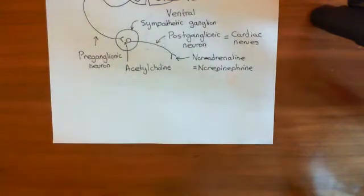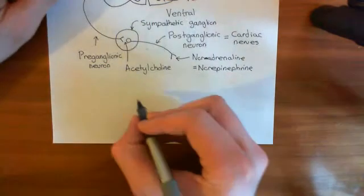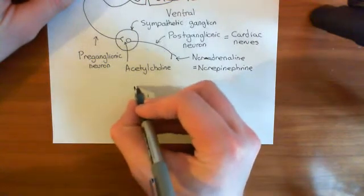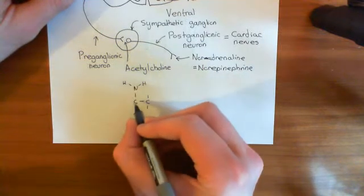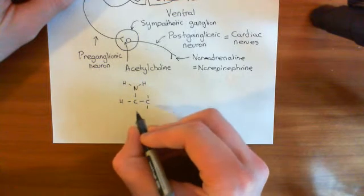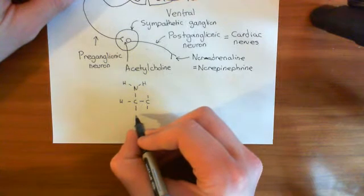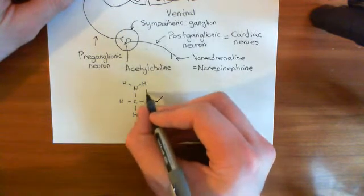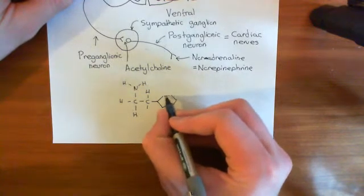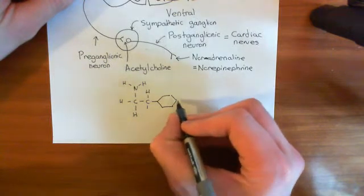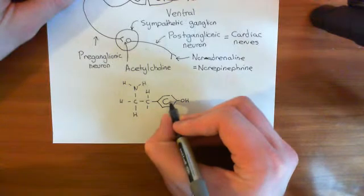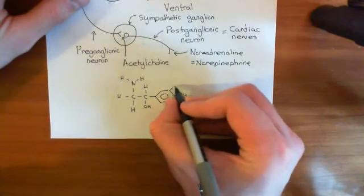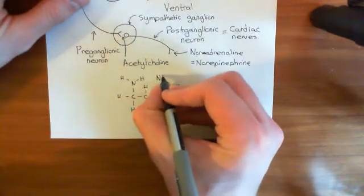The structure of norepinephrine is basically the structure of tyrosine modified. Tyrosine has an amino group, an alpha carbon with a hydrogen, a carboxylic acid group, a methylene group, and a benzene ring with a single hydroxyl. In noradrenaline, the carboxylic acid is replaced with a hydrogen, and there's an additional hydroxyl on the beta carbon. I'll draw the structure of noradrenaline and then show how it's similar to tyrosine.